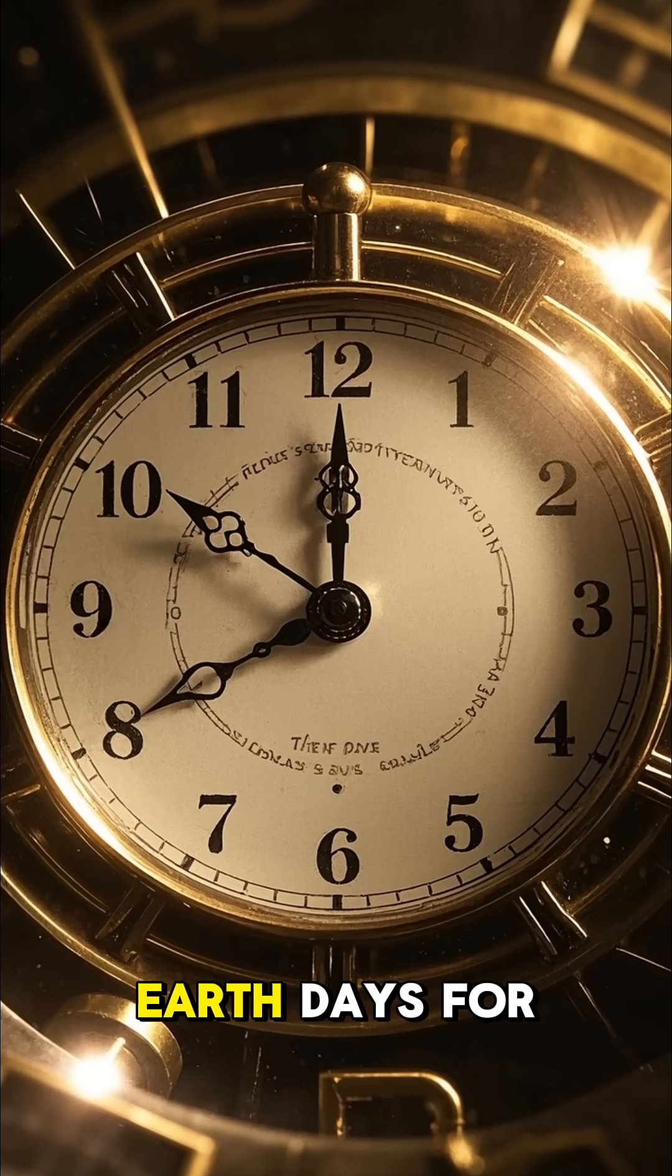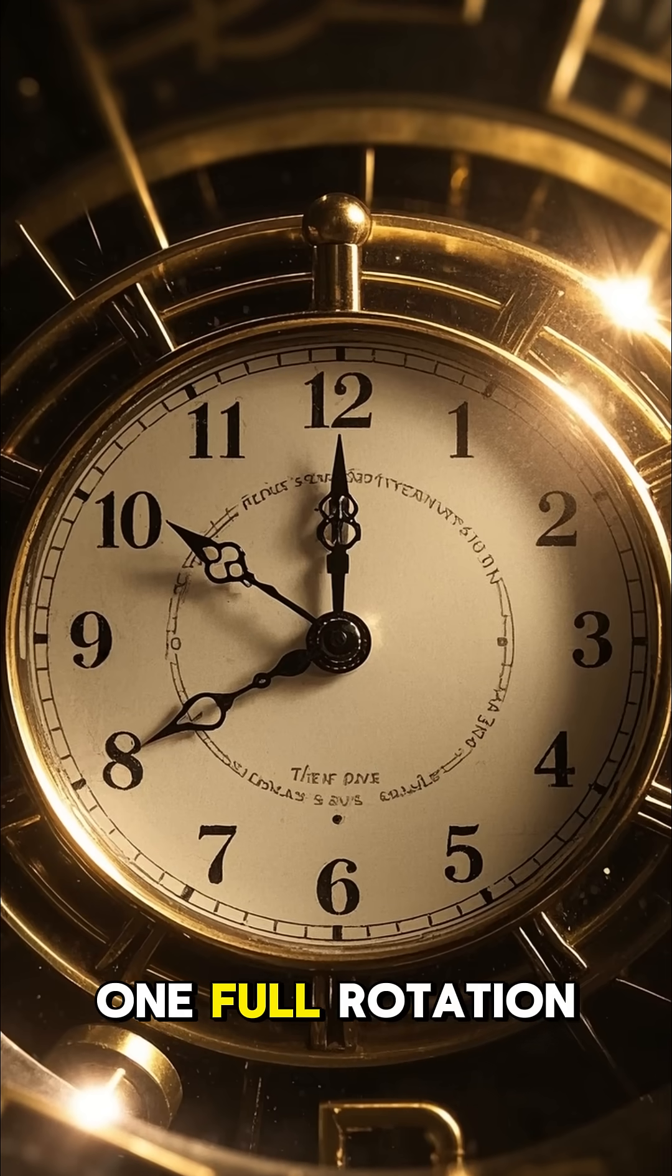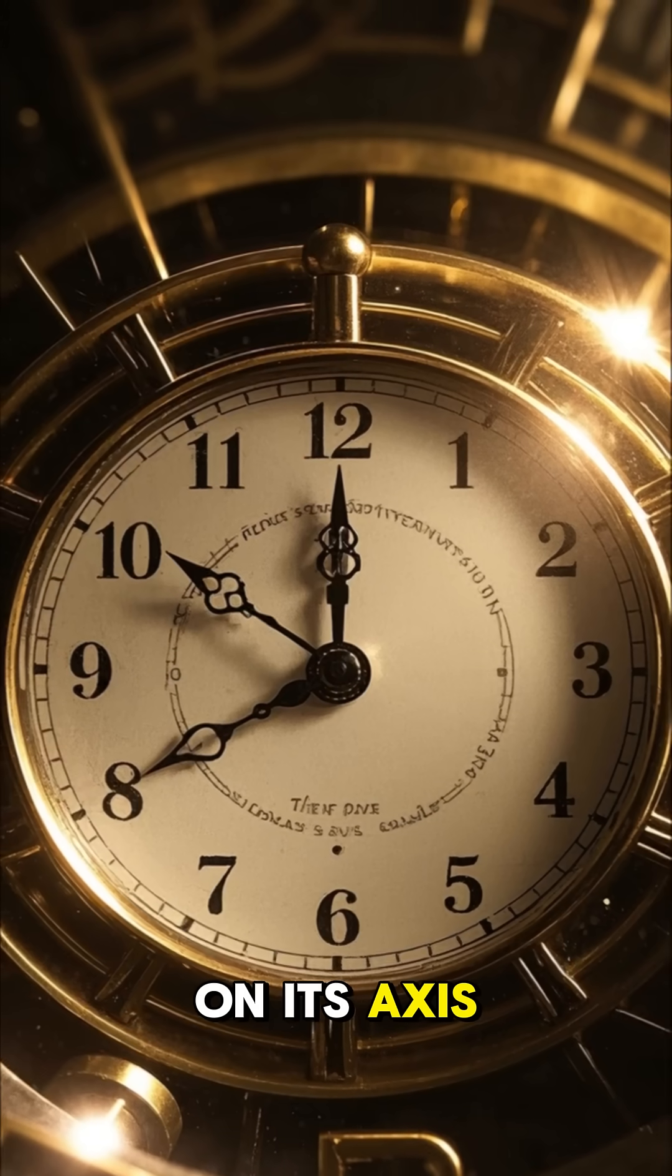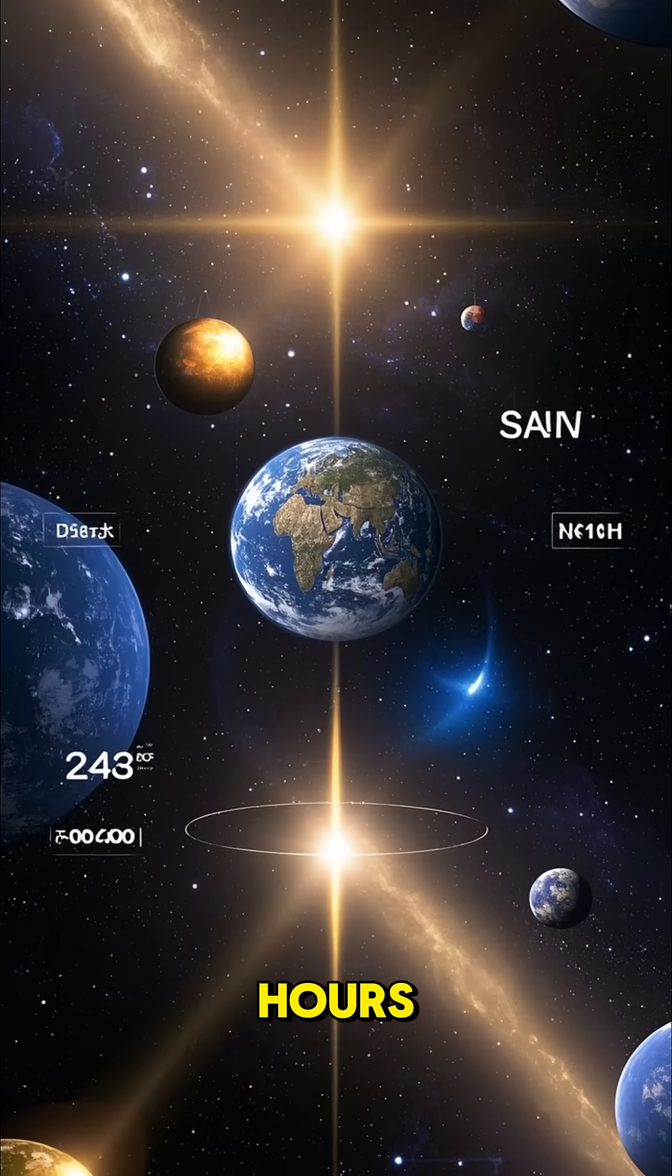It takes 243 Earth days for Venus to make one full rotation on its axis. That's longer than a day on Earth, which is 24 hours.